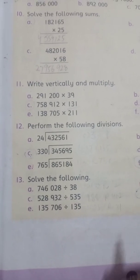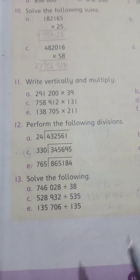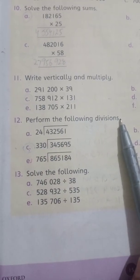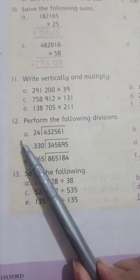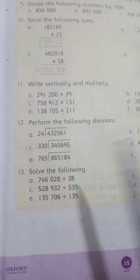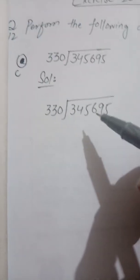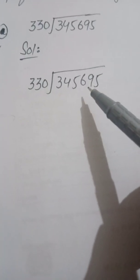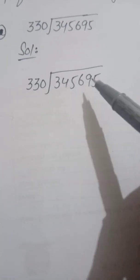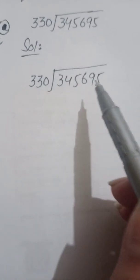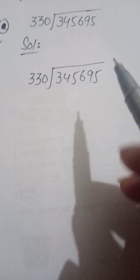Bismillahirrahmanirrahim, assalamu alaikum. Hope that you all will be fine, students. As you know, we were doing exercise 1C, question number 12: perform the following divisions. We have already done parts A and B. Today we will solve parts C and D, and E and F will be your homework. Part C is 345,695 and we have to divide this number by 330. 330 is the divisor and 345,695 is the dividend.